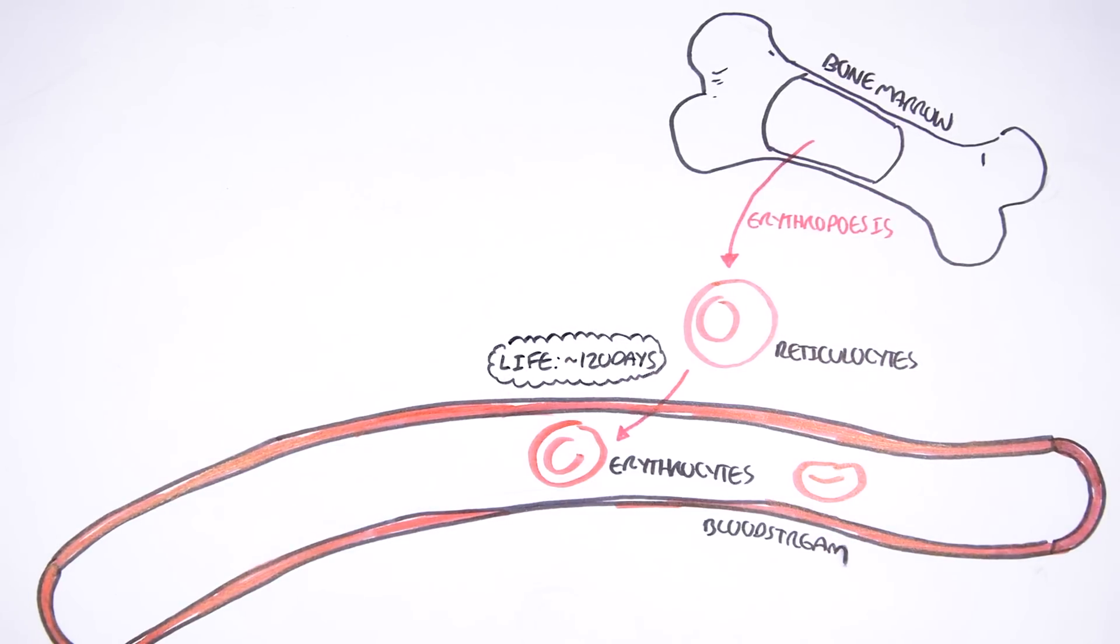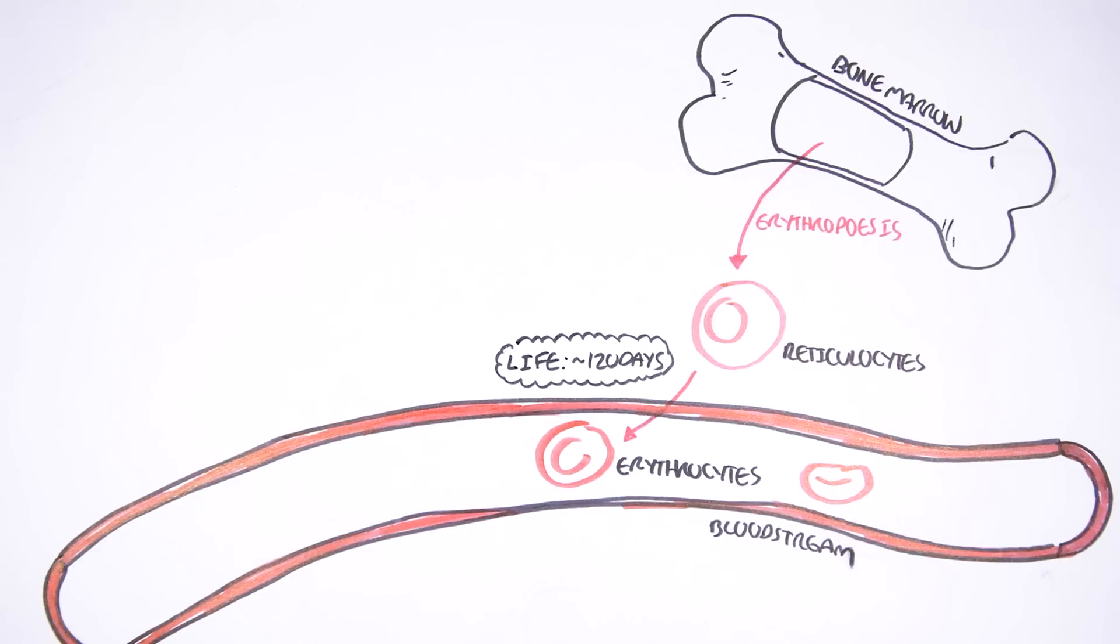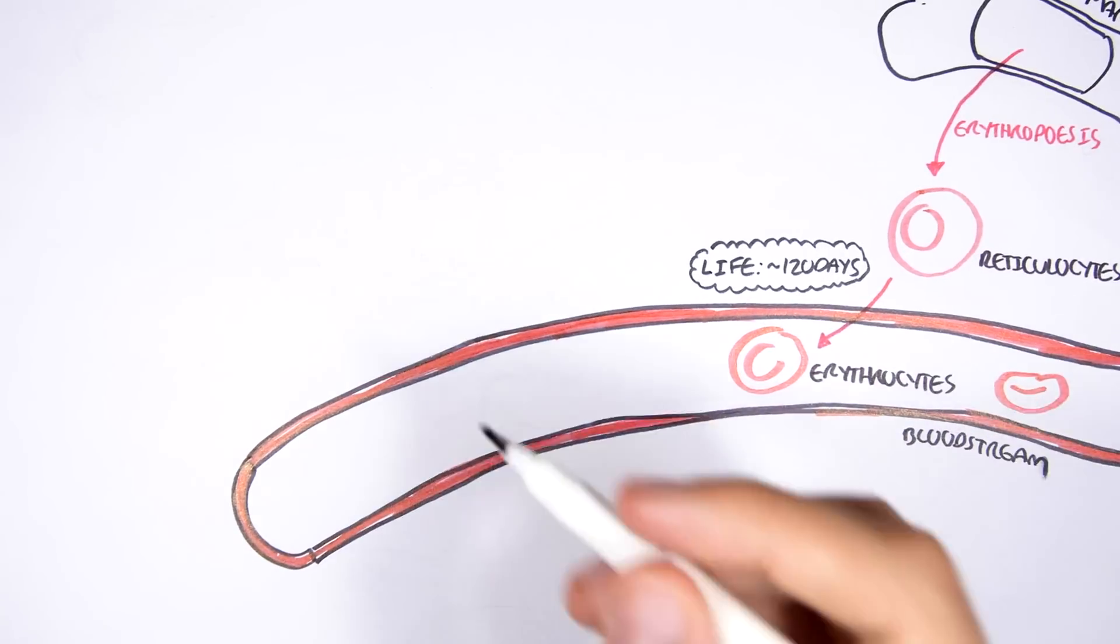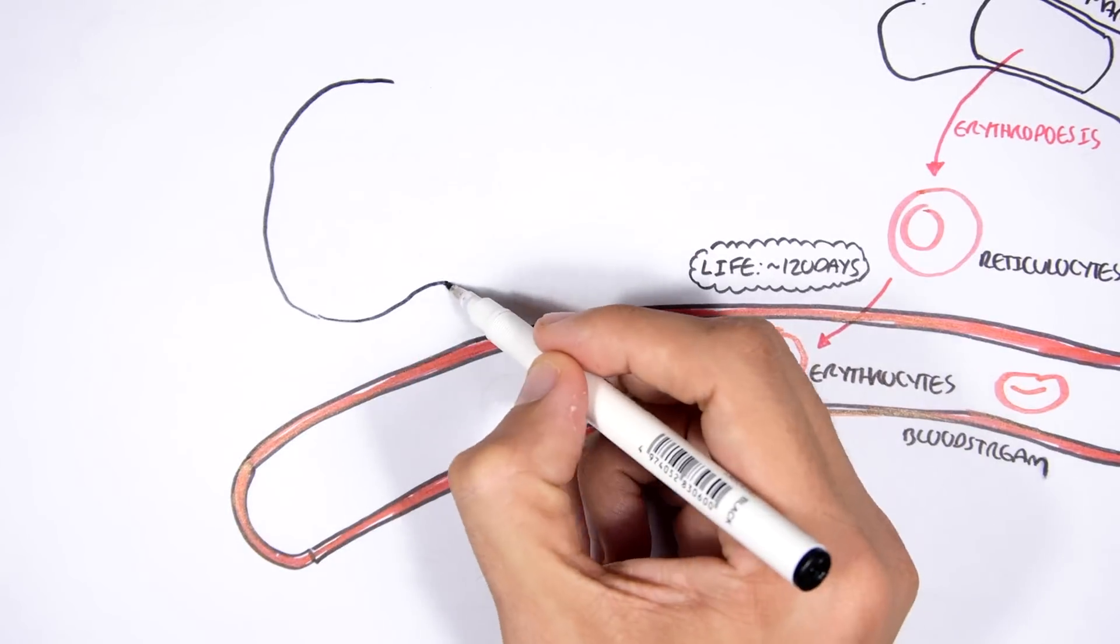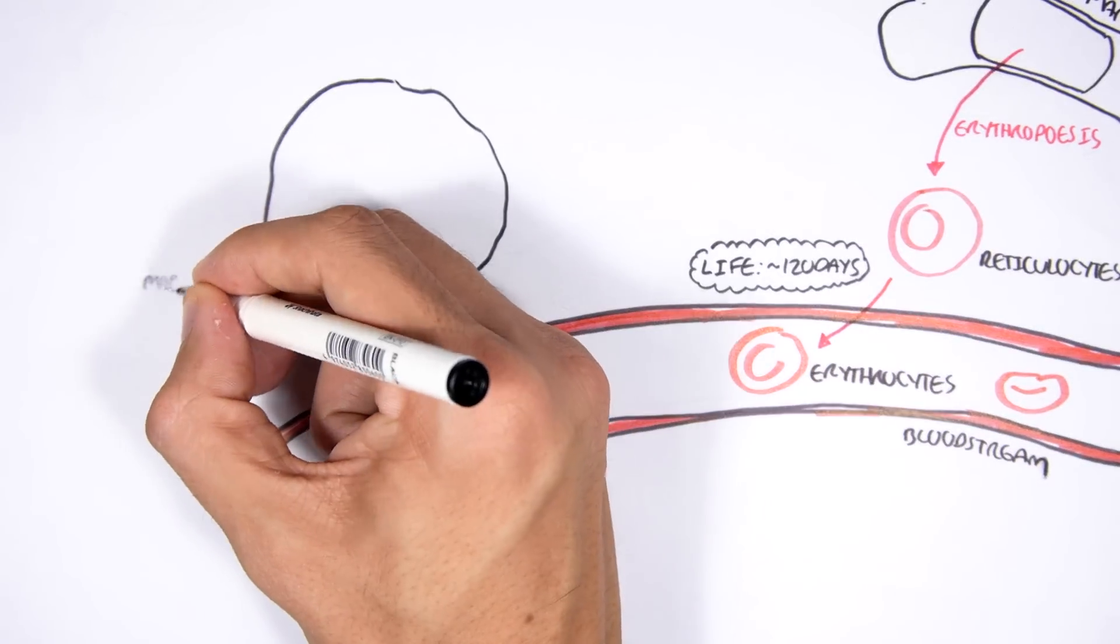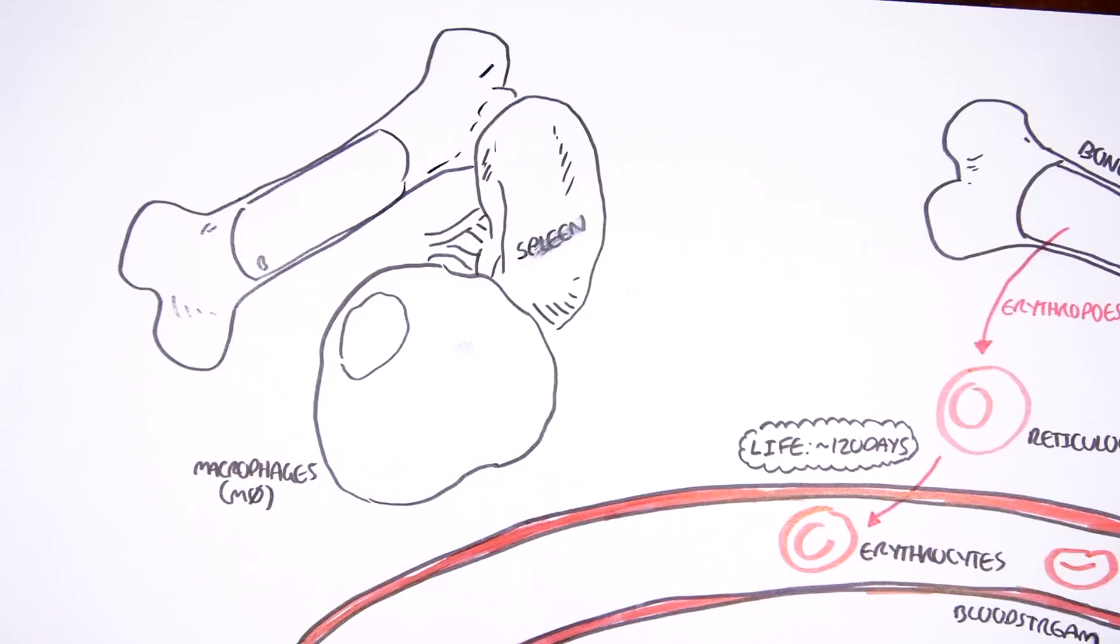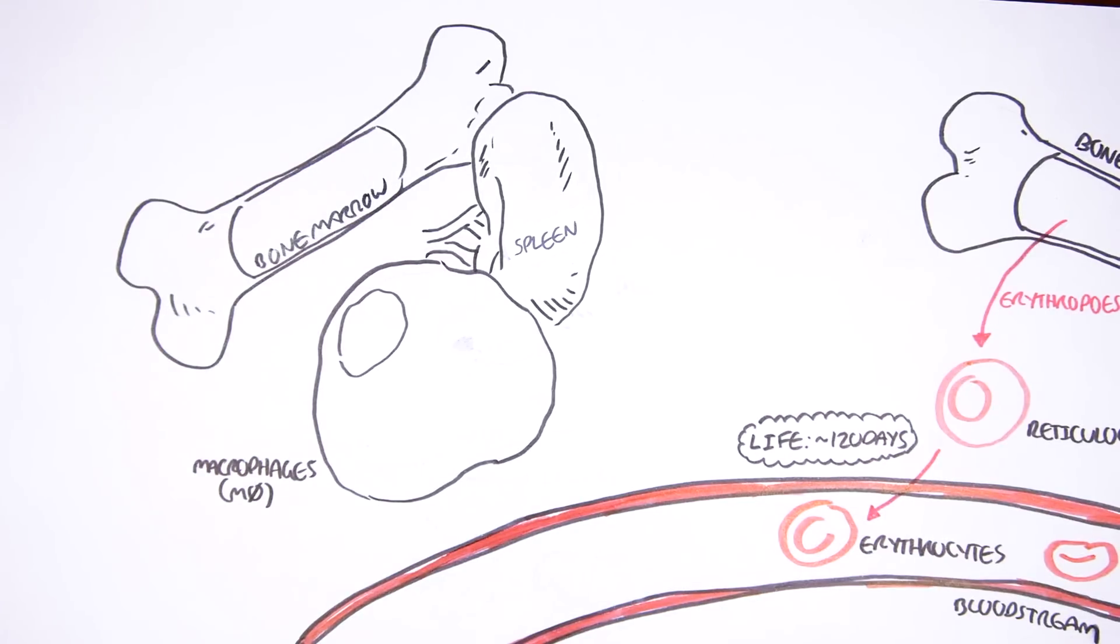When these erythrocytes get old or they are damaged, cells known as macrophages, which are phagocytes, located in the spleen and the bone marrow, will engulf these old erythrocytes and degrade them.